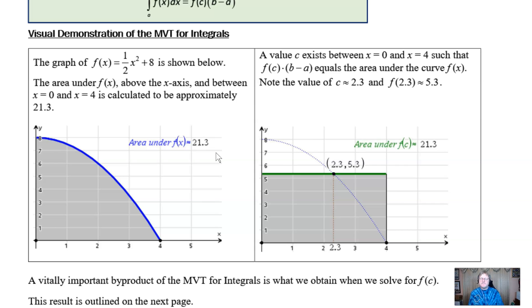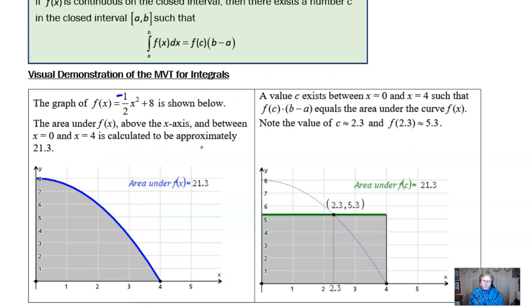Let's say that we take a function f(x) equal to negative 1/2 x squared plus 8, so it opens down like this. The area under this function above the x-axis in between x equal to 0 and 4 is calculated to be 21.3. I went ahead and used the graphing calculator and computed it to be 21.3.